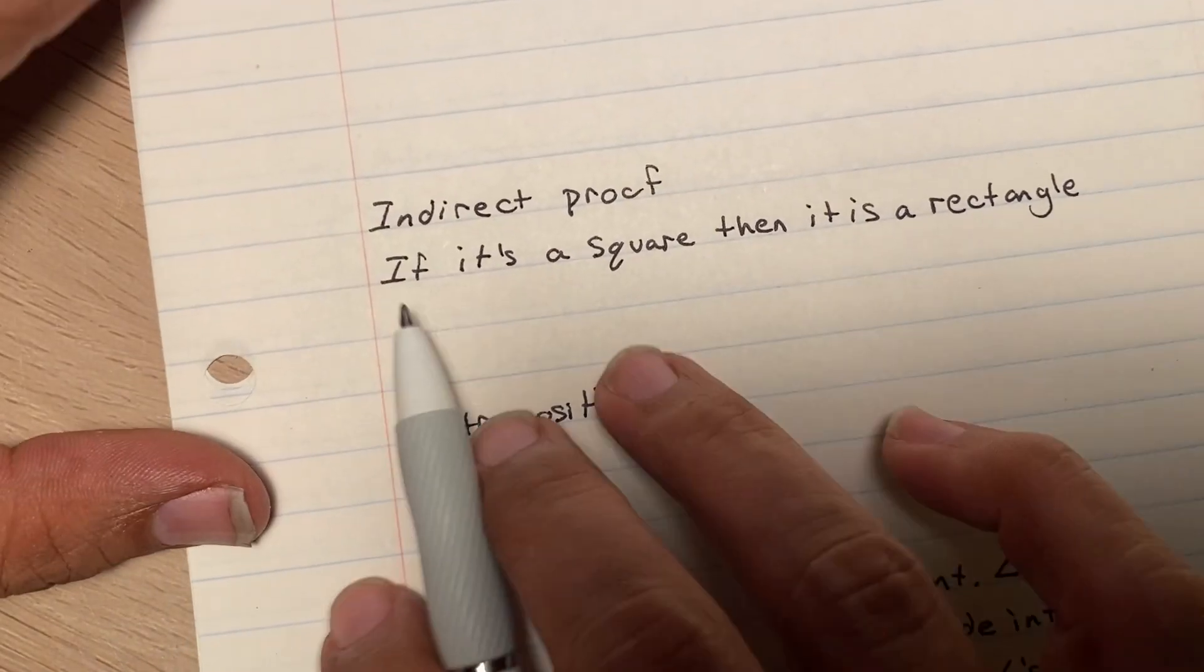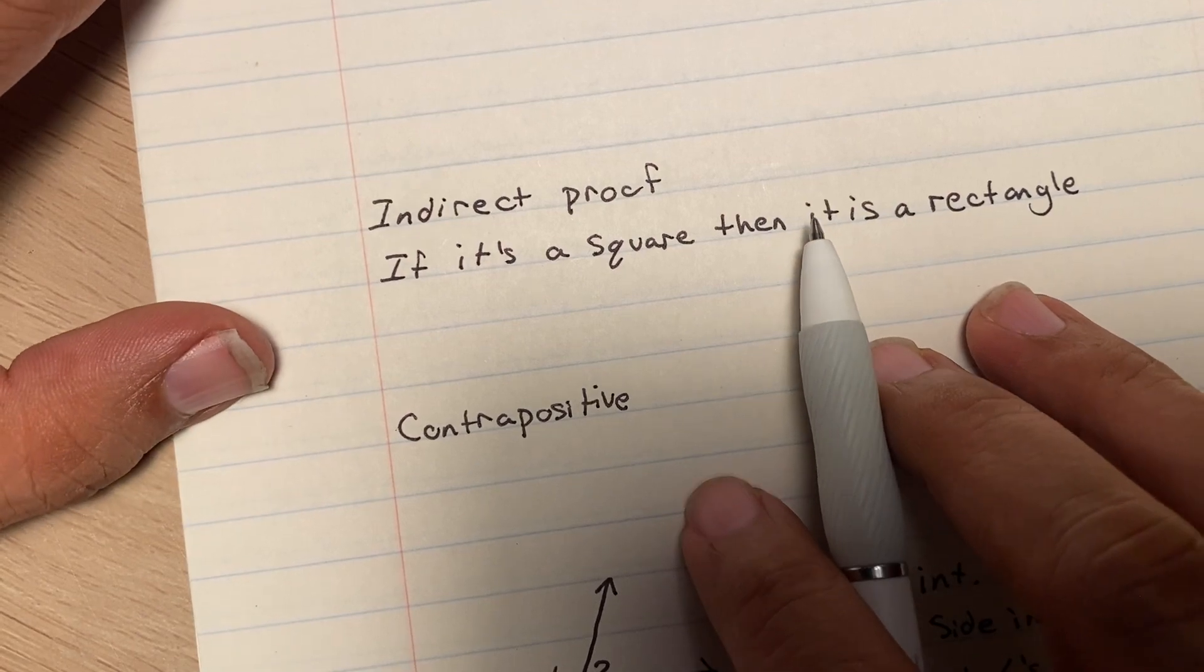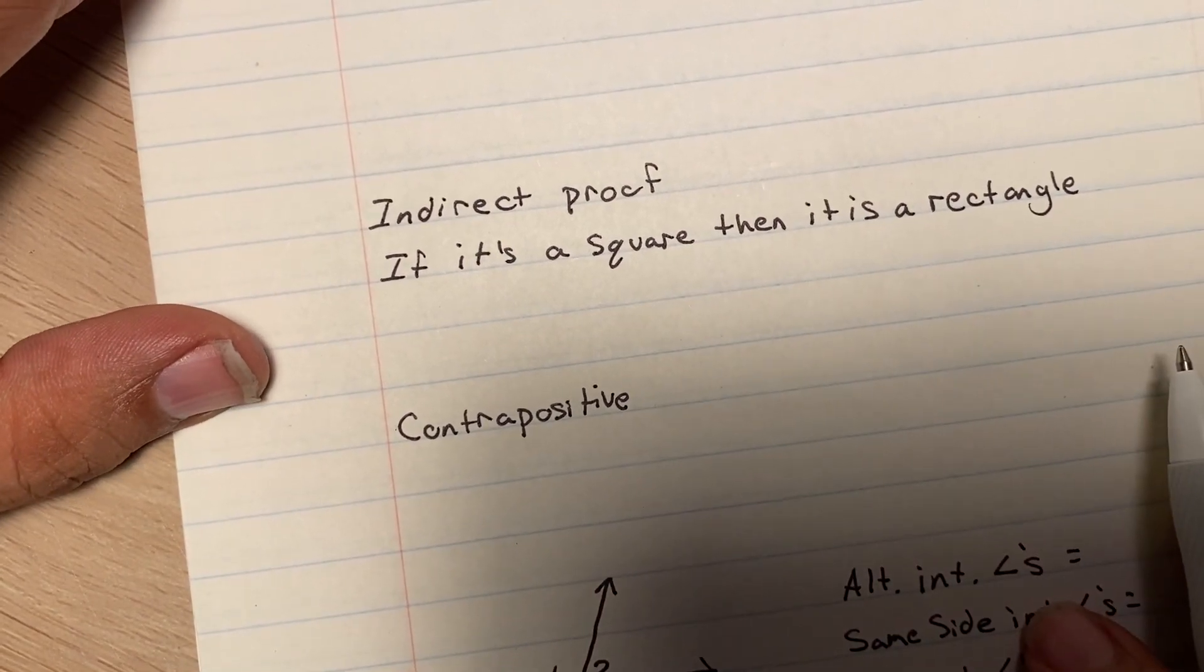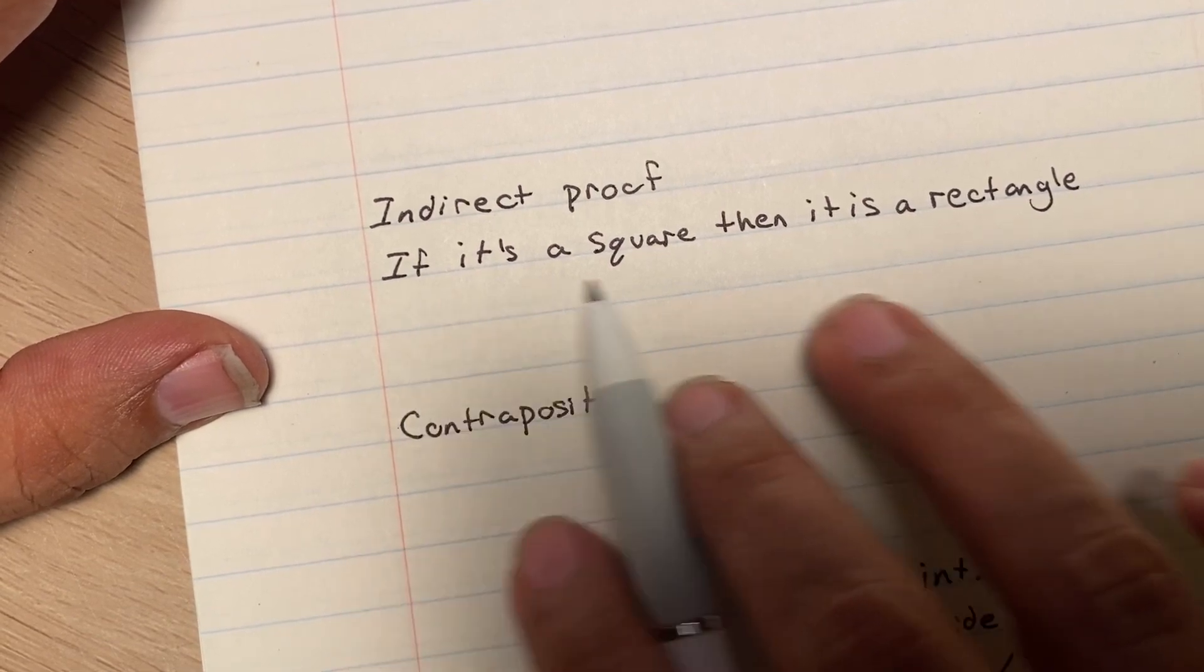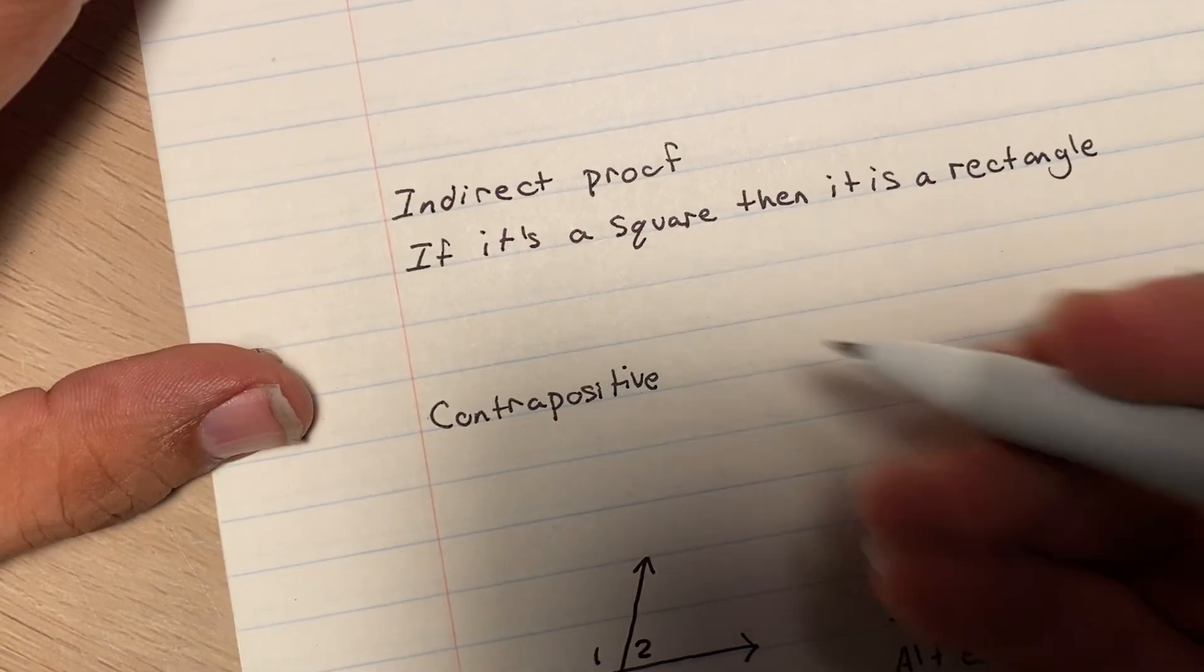Now, I'm going to be talking about an indirect proof. So, in the truth chart, to make a statement false, you have to just have the truth in the beginning and then false the second part.